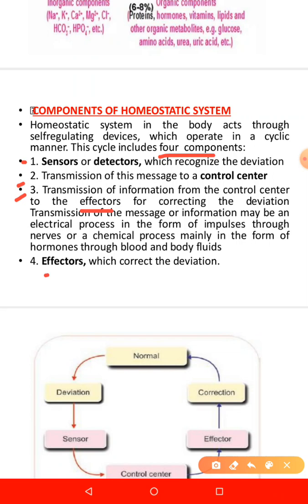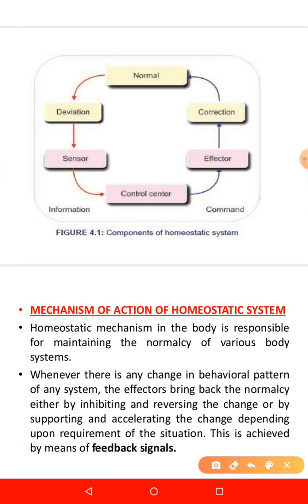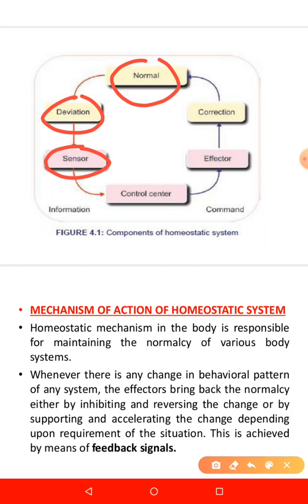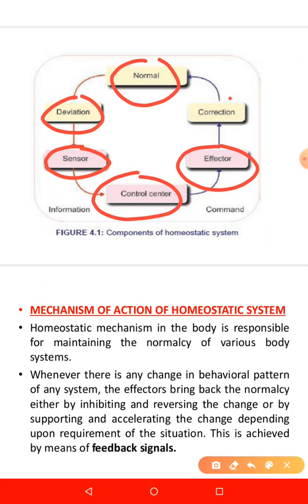The last component is effectors, which correct the deviation. This can be shown in the form of a diagram. Whenever there is a deviation from the normal, it will be sensed by the sensor. The sensor will report that deviation to the control center — the brain. The brain will command a particular organ, such as the kidney to increase water absorption, or the intestines to increase calcium absorption. There will be correction. This is an automatic response, mainly controlled by the autonomic nervous system.